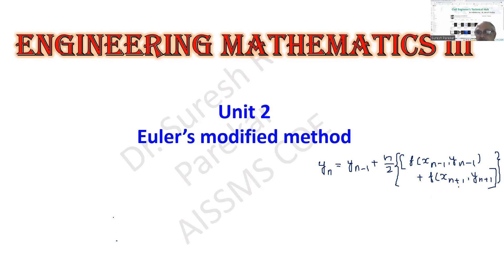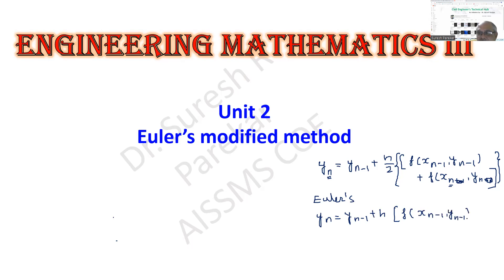This is f(x_n, y_n), not 1. If you remember, in Euler's method we have y_n = y_(n-1) + h * f(x_(n-1), y_(n-1)). But here we have to take the average. And this value — f(x_n, y_n) — we have to find by using Euler's method. Now we will solve one problem.